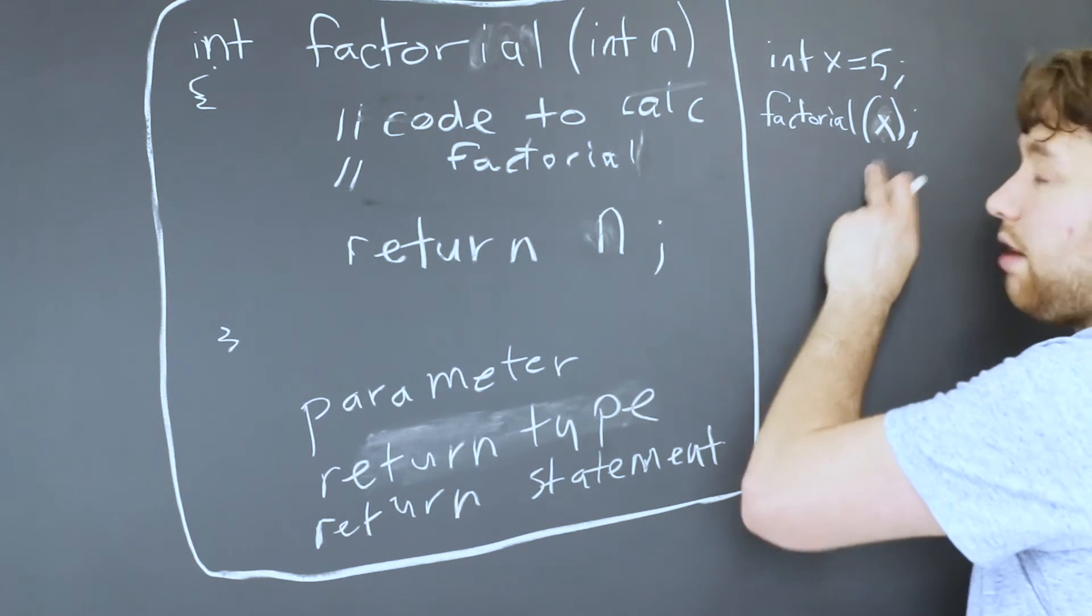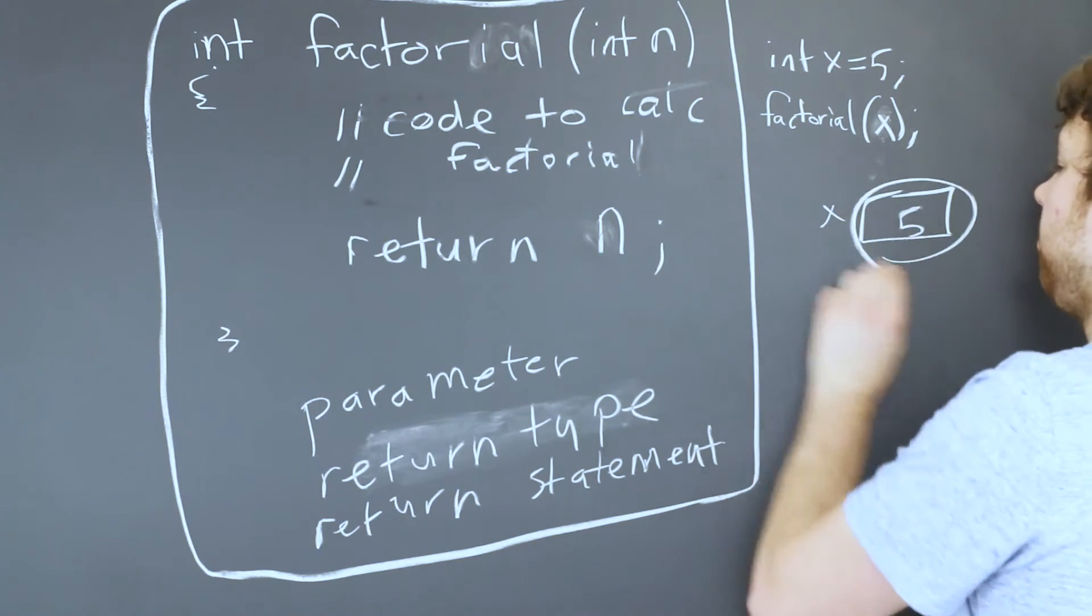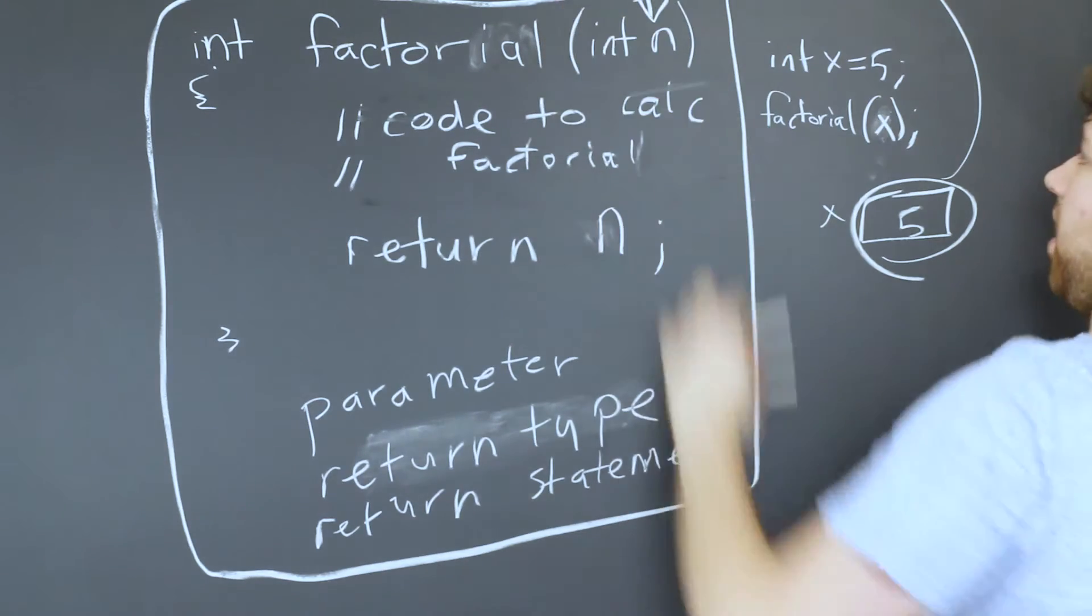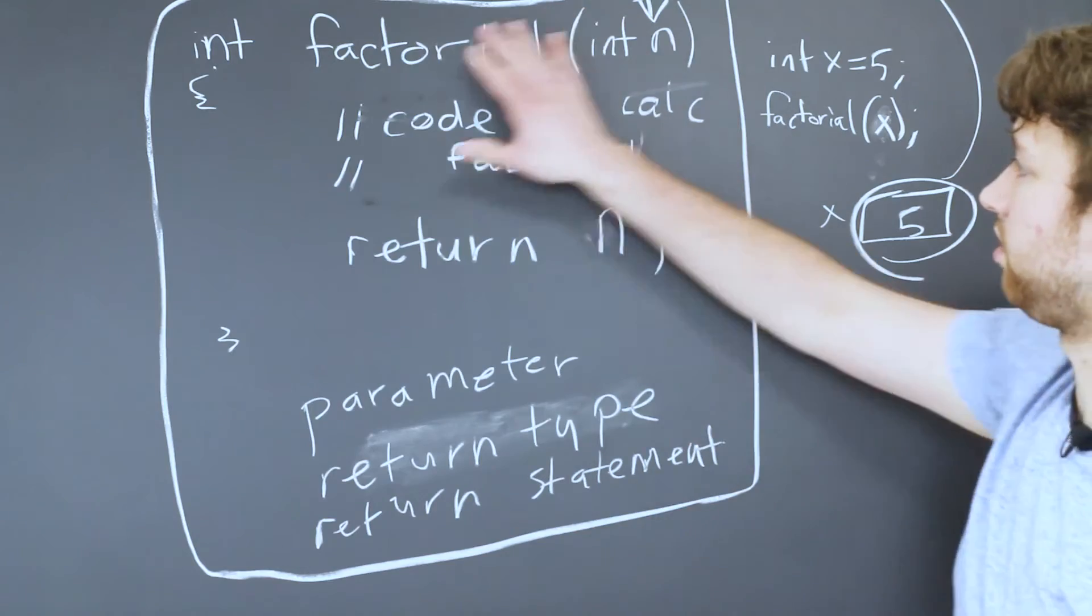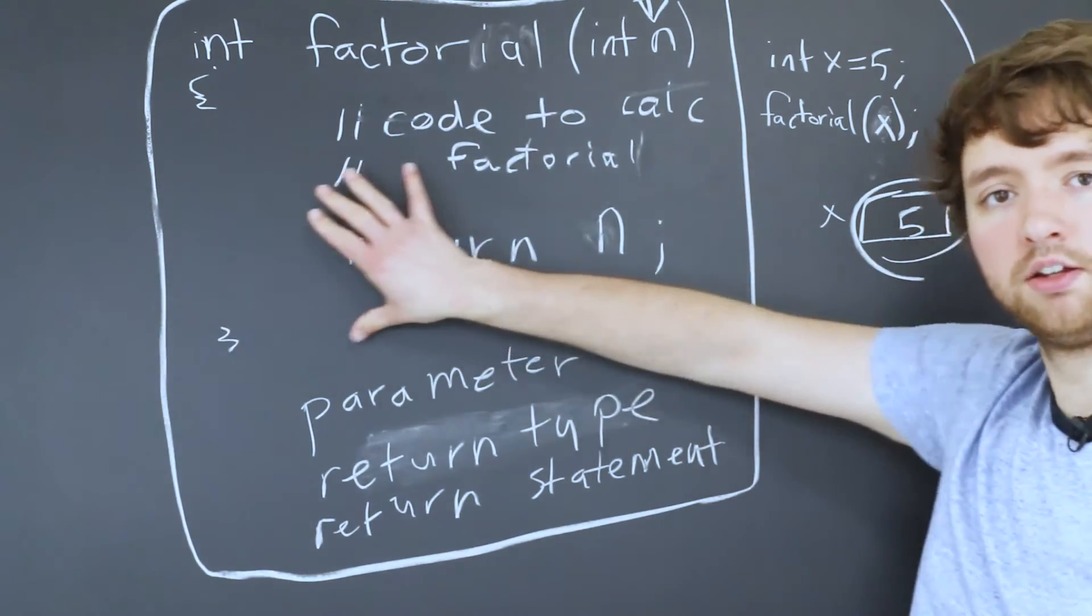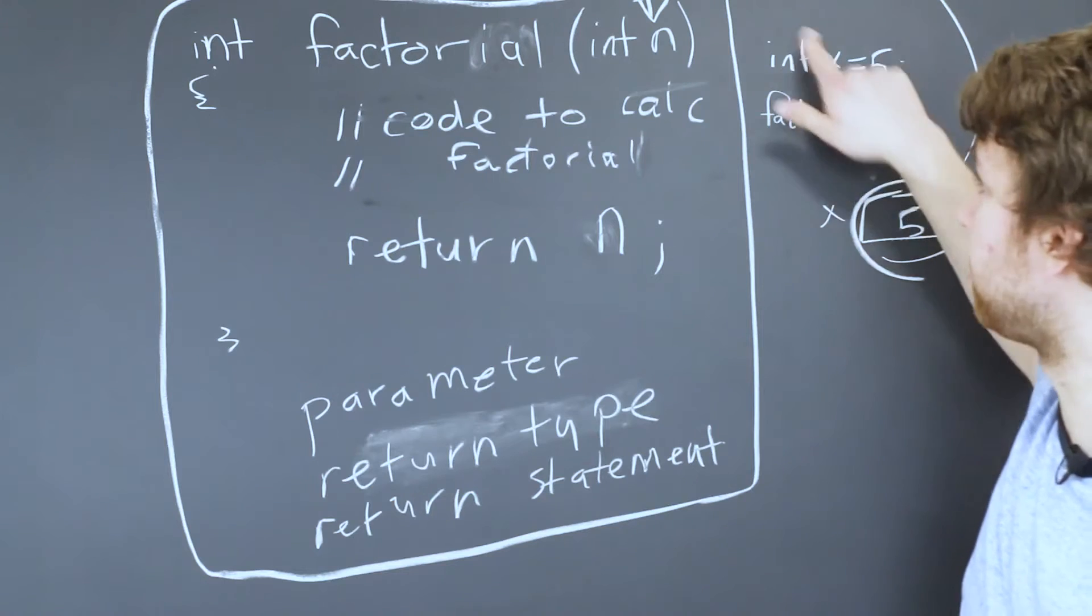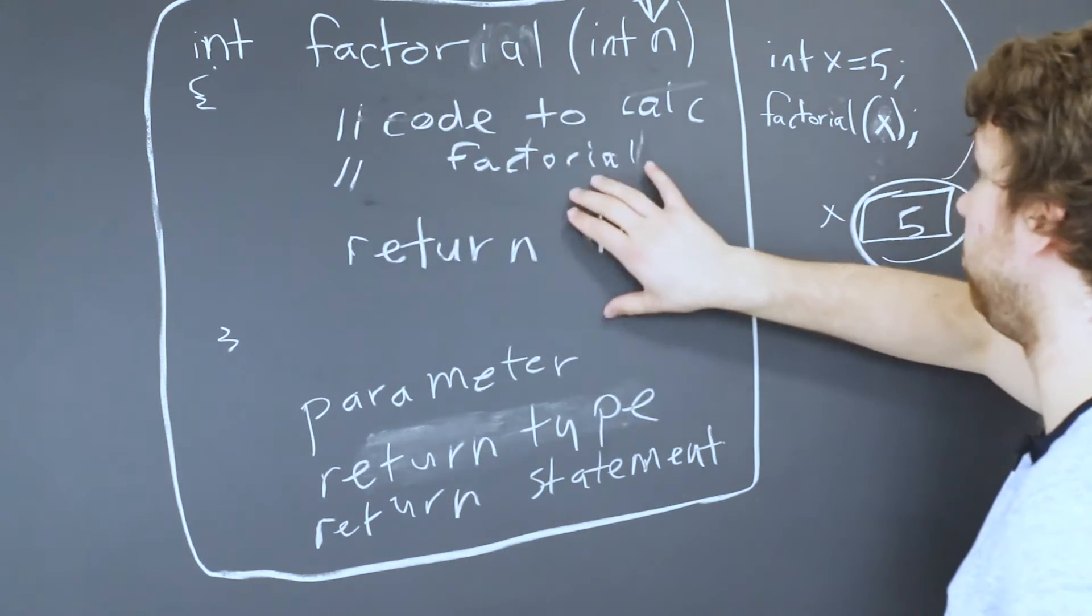So the value of x, x has the value five, the value here is going to get copied into n. And then n exists within this function. So if we change n, x does not change. It stays the same. This is a copy of the value. We work with it and then we return a new value.